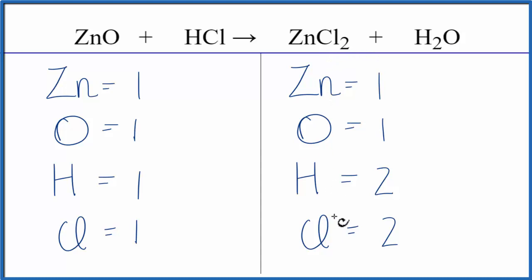So we could change the coefficient. Well, we need two hydrogens and two chlorines here to balance these. Change the coefficient in front of HCl.